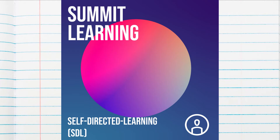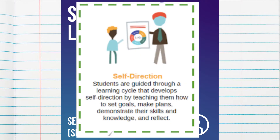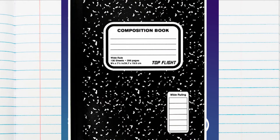In this video we're going to be taking a look at the part of Summit Learning focusing on self-direction. You may remember in our last video we discussed a little bit about self-direction, but today we're going to take a deep dive. If you've not already got it out, get a composition notebook, three-ring binder, or something with paper in it to take notes. Let's begin.